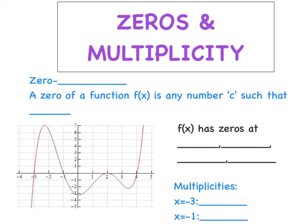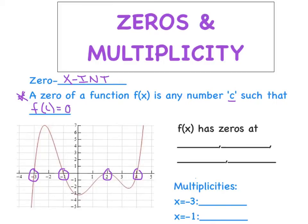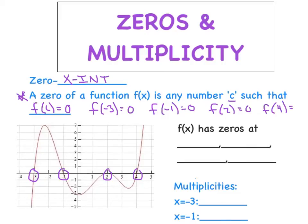First things first: remind yourself that a zero is just another phrase to describe an x-intercept, where the graph crosses the x-axis. Our graph here has an x-intercept at negative 3, negative 1, positive 2, and positive 4. The definition says that a zero of a function f(x) is any number c such that f(c) equals 0. So f(negative 3) equals 0, f(negative 1) equals 0, f(2) equals 0, and f(4) equals 0 — the output is 0 for all of those.